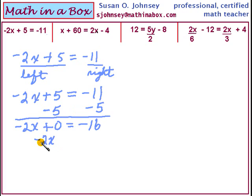So we still have the negative 2x on the left side now. It's all by itself now and on the right we have negative 16. So now we have only one number term and one variable term.